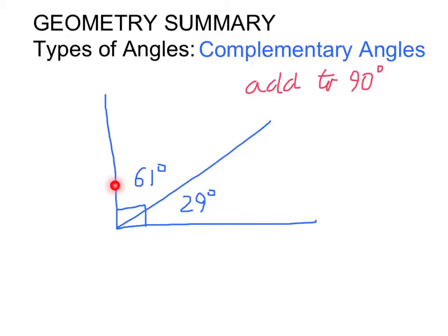Complementary angles are angles that add up to 90 degrees. For example, 61 plus 29 equals 90.